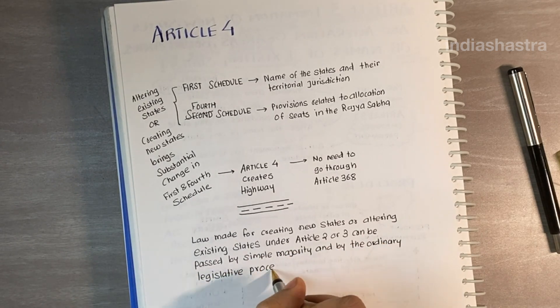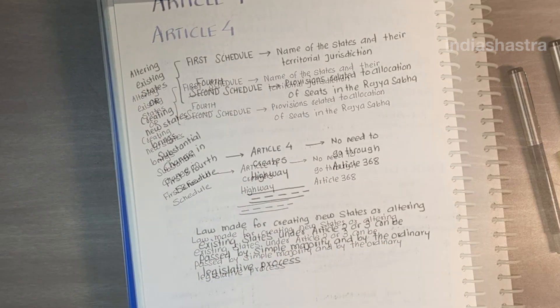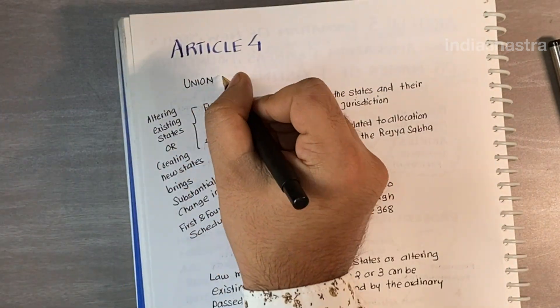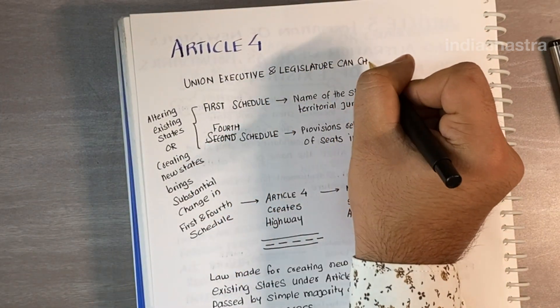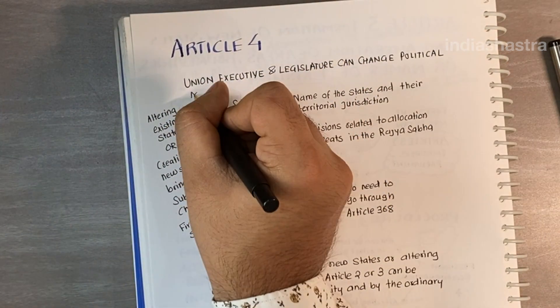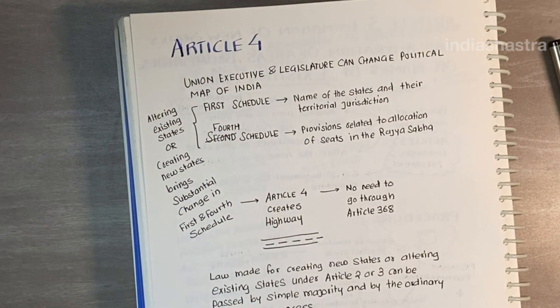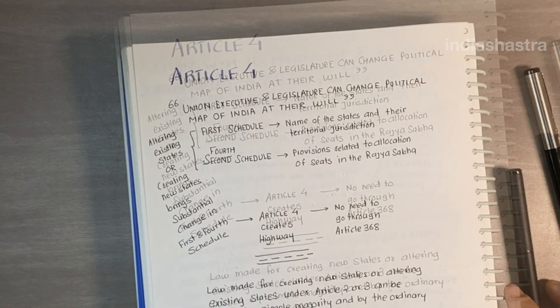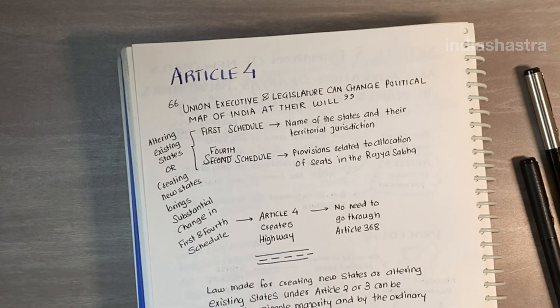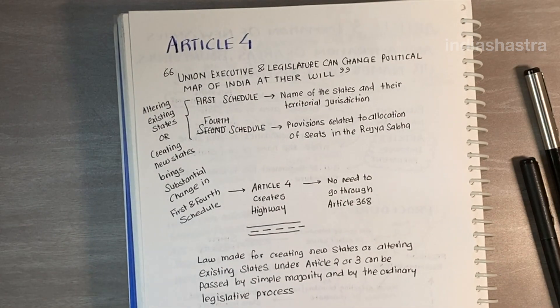The whole point of this is that the union executive and legislature can single-handedly change the political map of India at their will. So, this was Article 4 of the Indian Constitution.